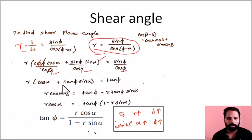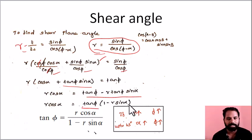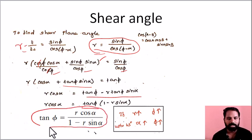We will rearrange by moving R and the tan φ sin α term to the right-hand side, then factor out tan φ. Multiplying through by 1 minus R sin α gives us the final result: tan φ is equal to R cos α divided by 1 minus R sin α. This equation is very important.